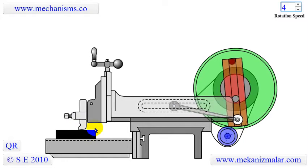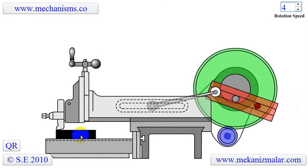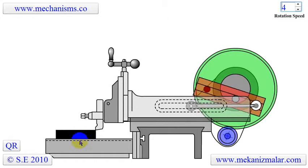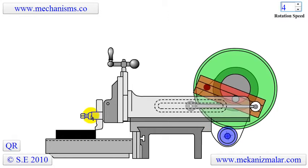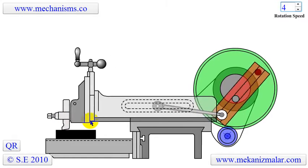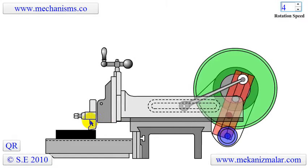At the same time, another mechanism, not shown in this animation, slightly moves the toolbed perpendicularly to the ram direction. This movement allows the workpiece to be fed for the next cutting stroke.